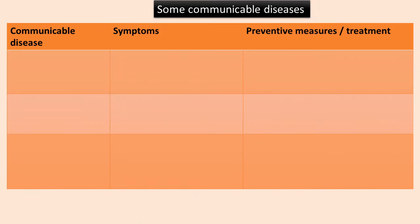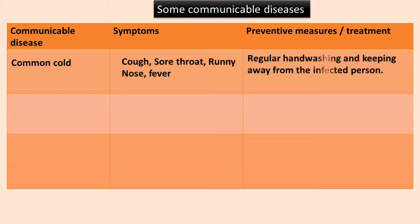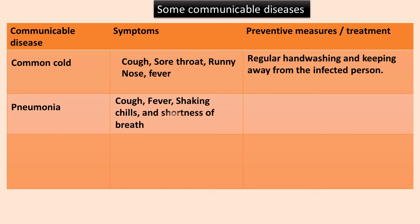Let us look at some communicable diseases. The common cold causes cough, sore throat, runny nose, and fever; it can be prevented by regular hand washing and keeping away from infected persons. Pneumonia causes cough, fever, shaking chills, and shortness of breath; it is treated with antibiotics.